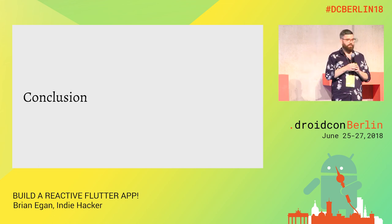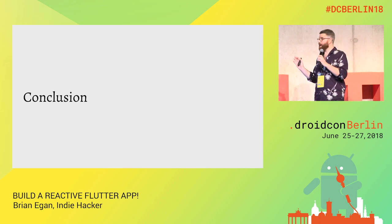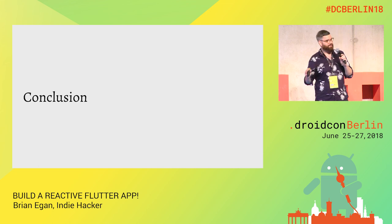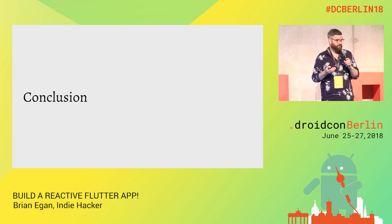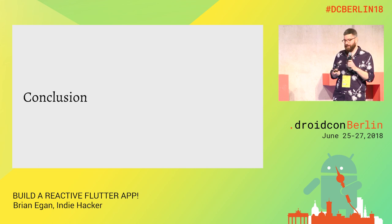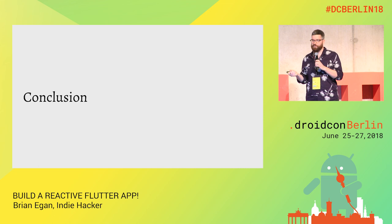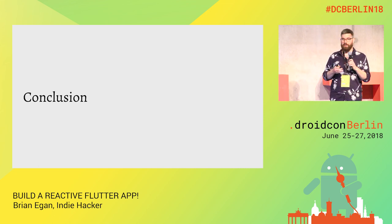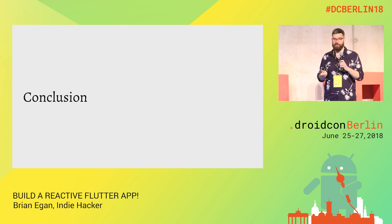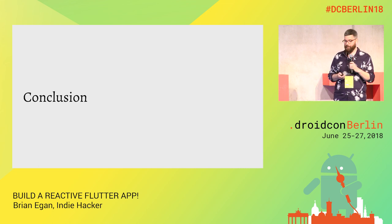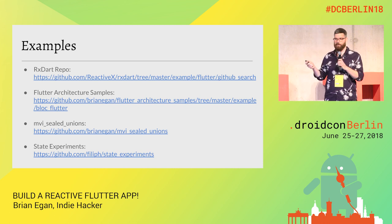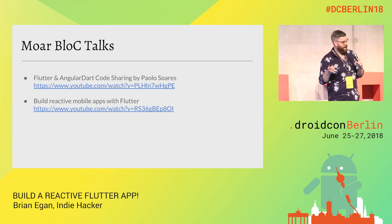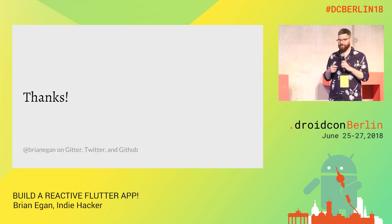My conclusion is that there's no reason to reinvent the architectural wheel. We have really good patterns from Android that work well for statically typed languages, and we can use those normal patterns combined with what Dart offers out of the box — like streams — to make powerful architectures that are easy to test, easy to work with, and allow sharing a great deal of code even with Angular Dart apps. I'll post these slides afterwards, and there are more advanced examples and additional talks on the BLoC pattern linked as well. Thank you very much.